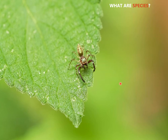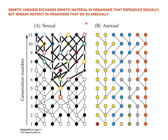Let's talk about what a species actually is. It turns out this sounds like a basic question, but there's been a lot of debate over decades in biology and evolutionary biology — it's actually really difficult to answer. Part of it gets at how genetic information is being exchanged. Genetic lineages exchange genetic material in organisms that reproduce sexually, but remain distinct in organisms that do so asexually.